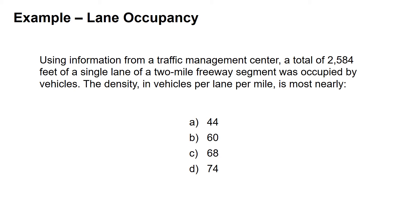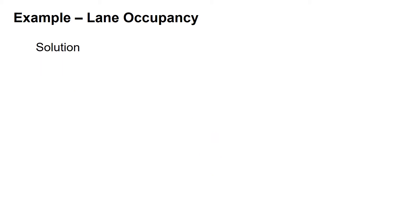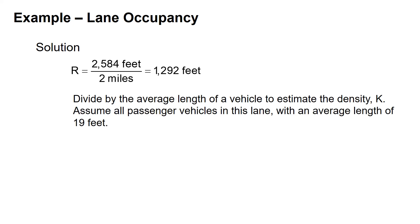Solving this, we solve for R, which is the total occupied length. That's 2,584 feet divided by the length of the overall segment, 2 miles. This gives us an R of 1,292 feet.